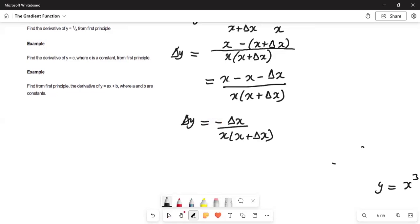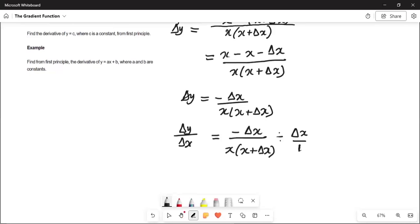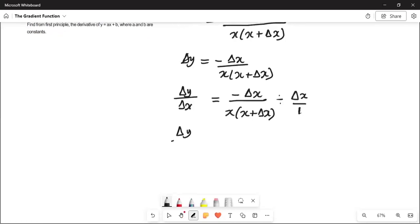Now dividing both sides by delta x will be negative delta x over x times x plus delta x divided by delta x. I intentionally use division instead of over so I can point out what I want to point out today. When you divide by a fraction, the sign of division will change to multiplication. So this delta y over delta x is equal to negative delta x over x times x plus delta x times 1 over delta x. The division changes to multiplication. They will multiply by the reciprocal of this fraction. So delta x divided by delta x is 1.